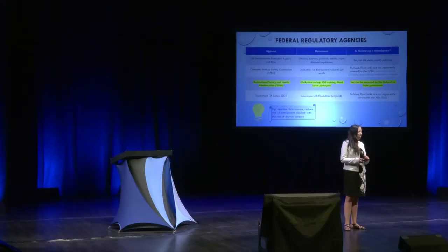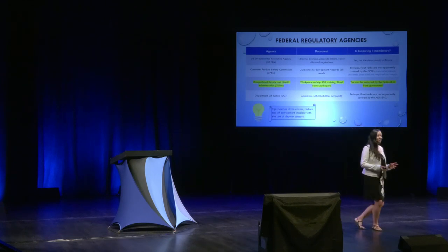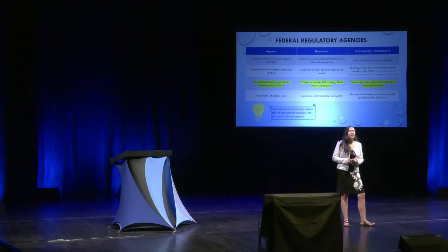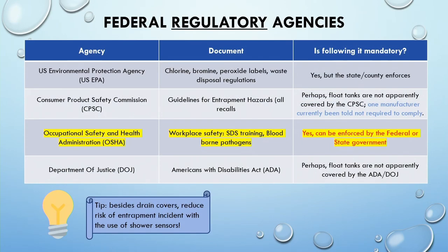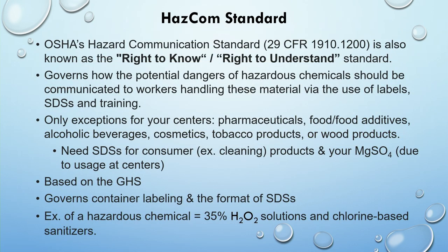You may recall this from last year's talk. There are these pesky little things called regulatory agencies, and one of them — OSHA — regulates workplace safety and safety data sheet training. This can be enforced by the federal or state government. How many of you have heard of HASCOM? It's a standard from OSHA, also known as the right-to-know standard or right-to-understand standard. It governs how potential dangers of hazardous chemicals should be communicated to workers who handle them via labels, safety data sheets, and training.